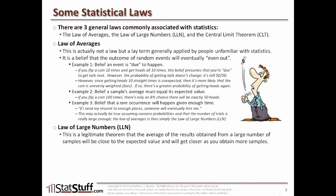So let's talk about the law of large numbers. This is a legitimate theorem, unlike the law of averages, where the average of results obtained from a large number of samples will be close to the expected value, and will be closer as you obtain more samples. An example is the expected average value of a six-sided die. The values 1 through 6 add up to 21; divide by 6, and the average is 3.5.